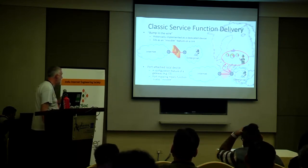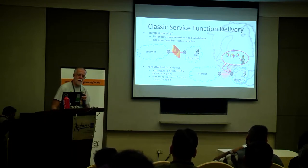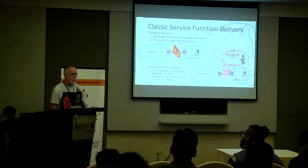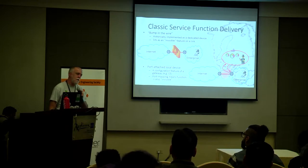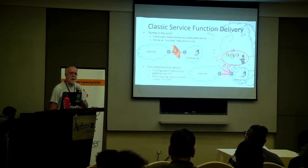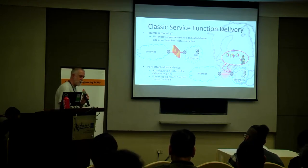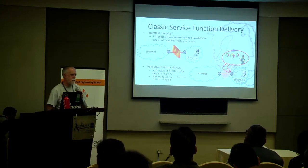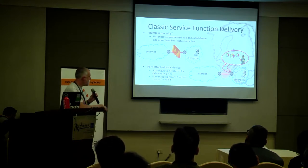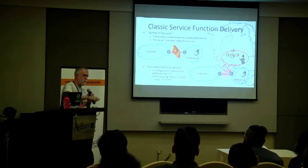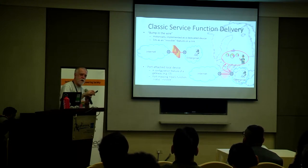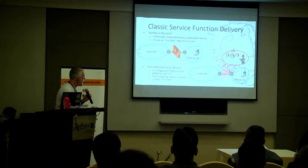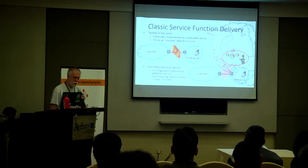Service functions used to just appear as bumps in the wire. A firewall is the classic example — as far as everybody is concerned there's a wire from a CE to a PE, and nobody's aware the wire is plugged into one side of a firewall and comes out the other. The next step was to put service functions in a dedicated local device that was port-attached, so traffic would come in, get processed, and be forwarded onwards. That type of device is also invisible to the traffic.